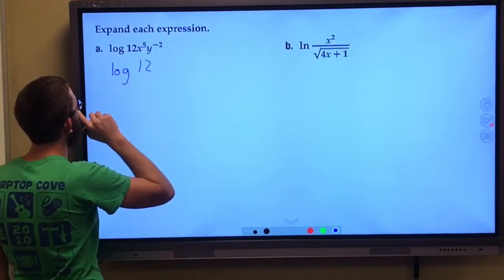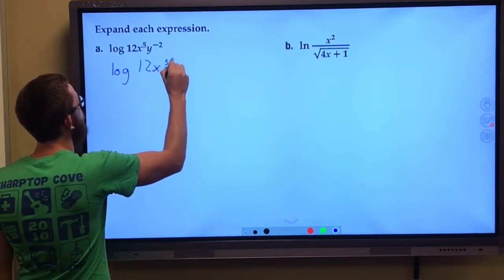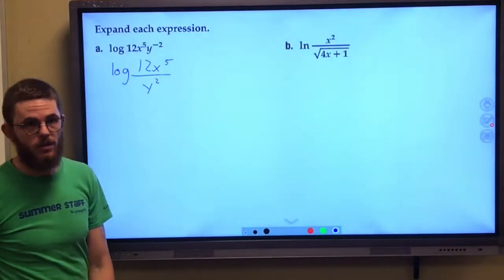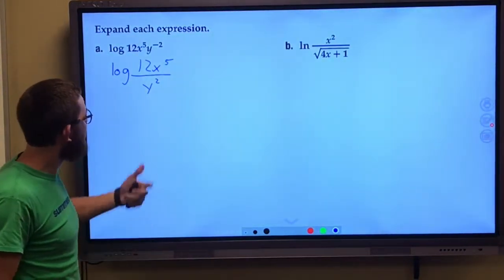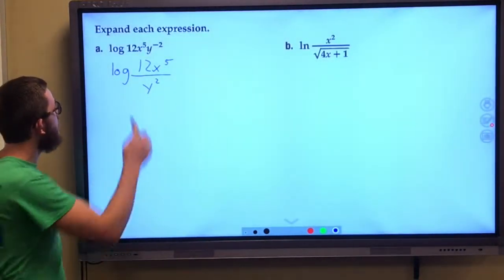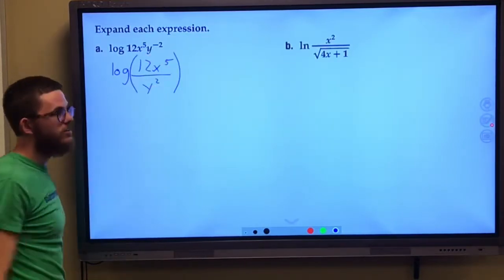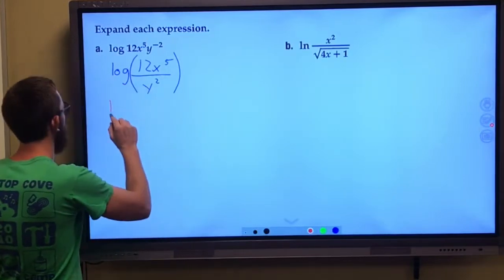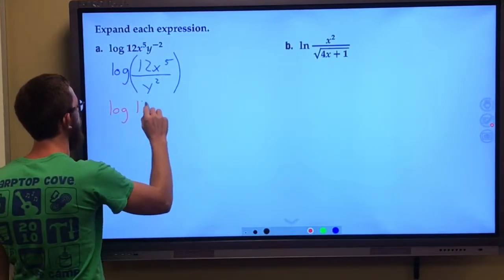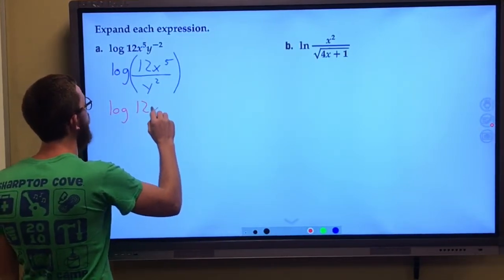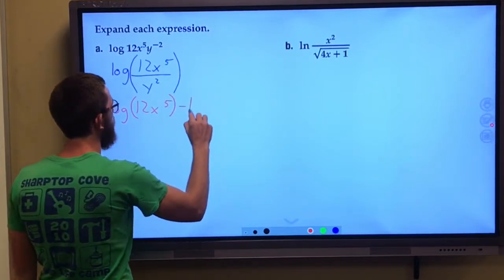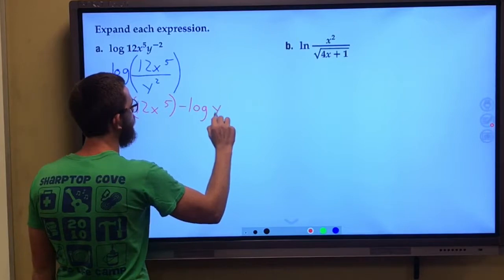So this is log base 12, x to the fifth power, over y squared. Okay, first step. I see now we have division. We've got log of this stuff that is division. So I'm going to use my quotient rule. So this is log of 12, x to the fifth, minus log of y squared.